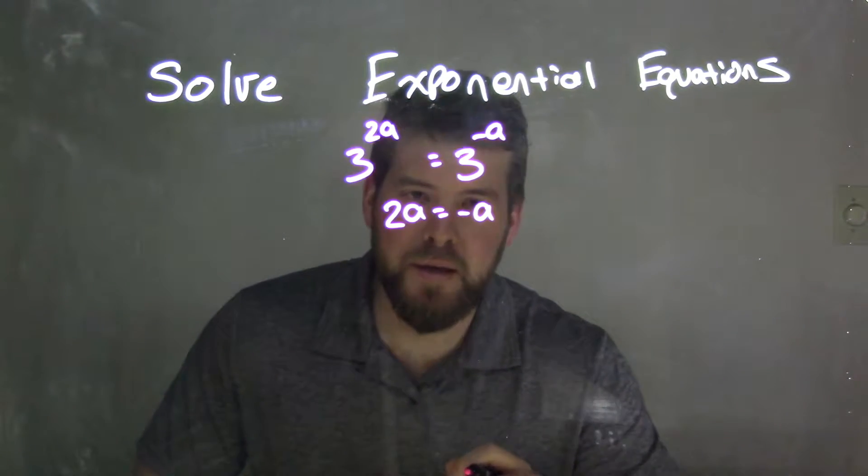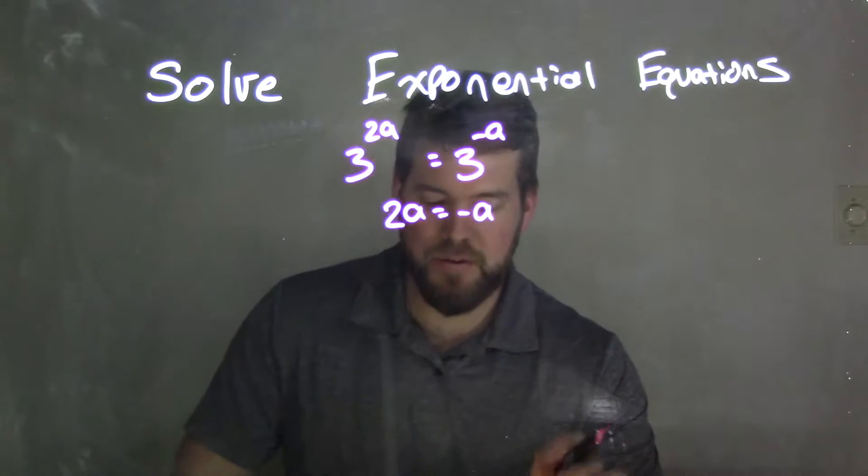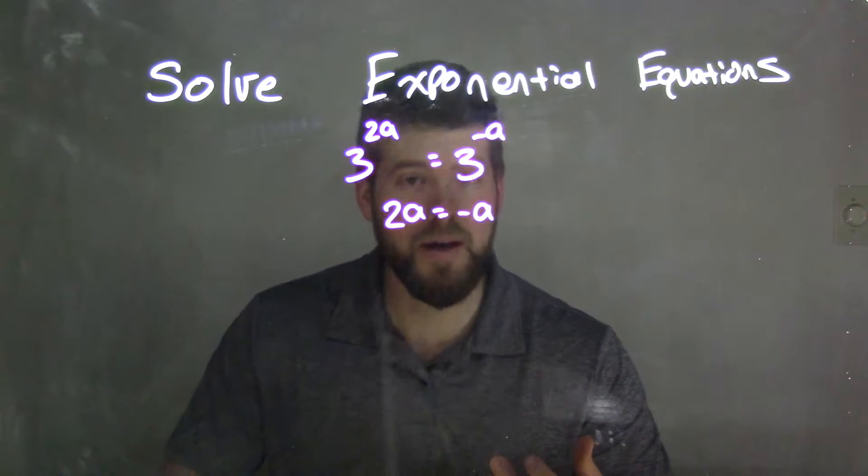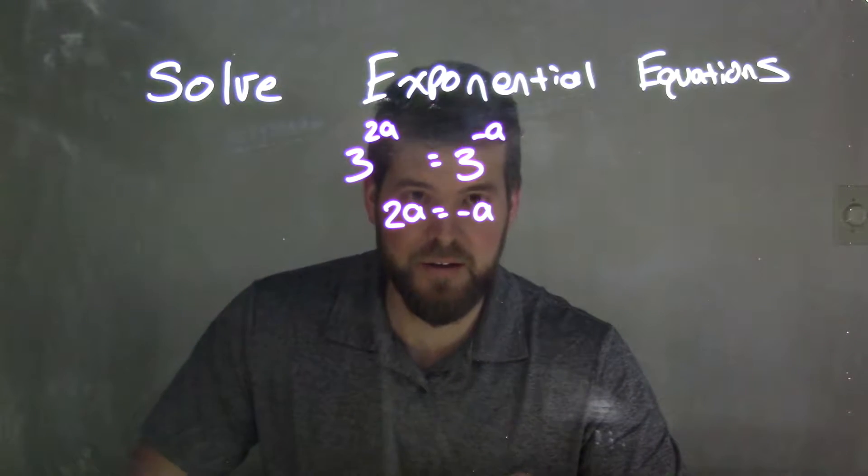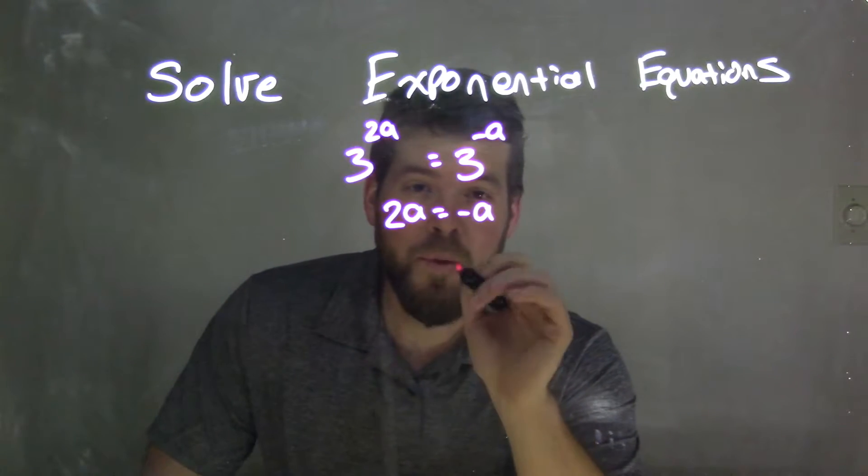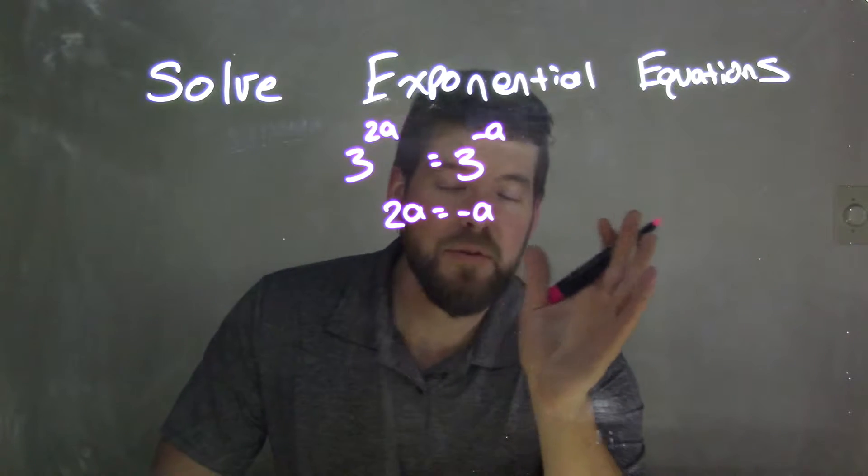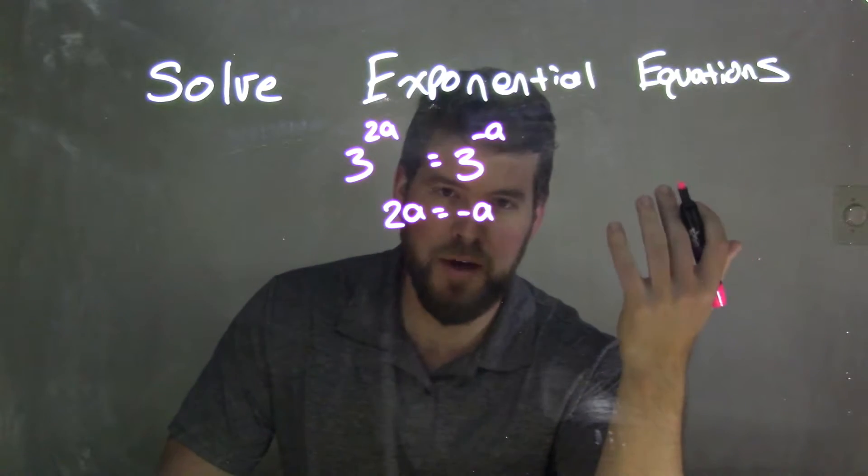But where do we go from here? And this is a common mistake that many students will make. Okay we have 2a on this side and negative a on this side. Some students want to say well we should just divide by negative a to both sides.